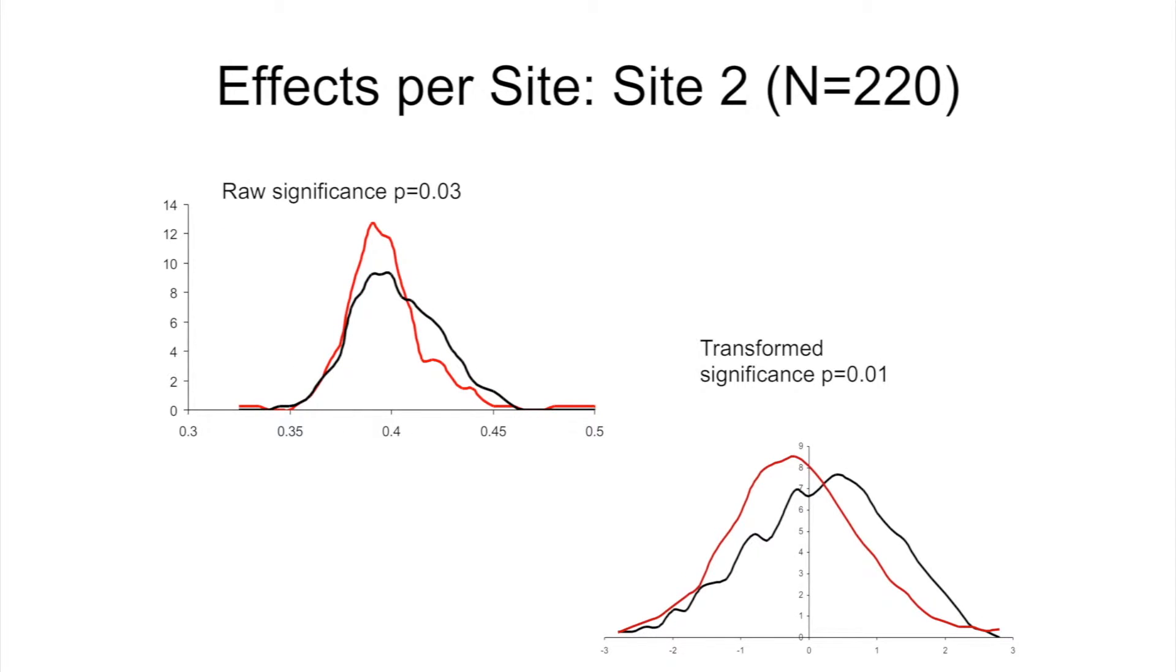We observed very much the same picture from another site, connected at a different scanner, different population group, albeit with some small overlap. And again, we observed that we have independently patients and controls form normally distributed data. And transformed significance produces about the same effect size.